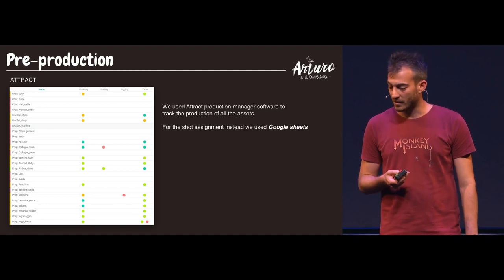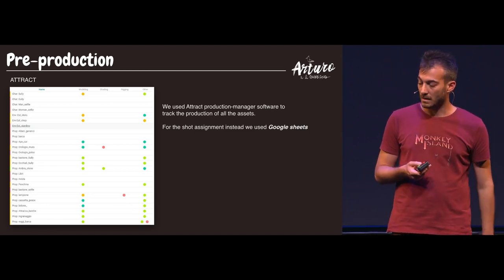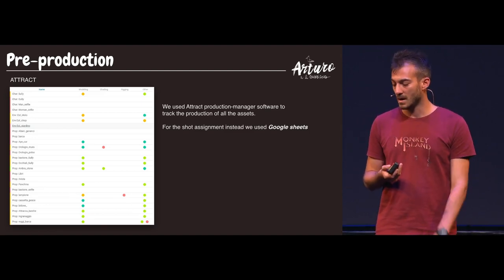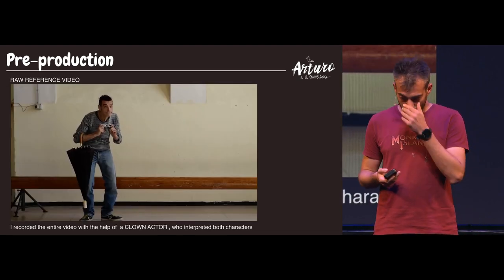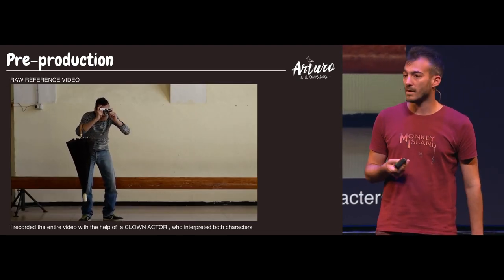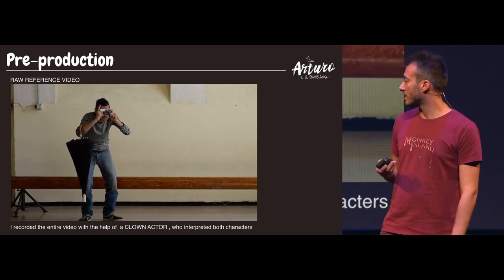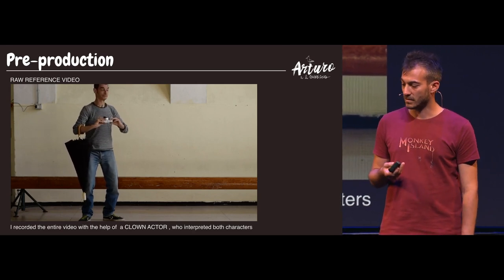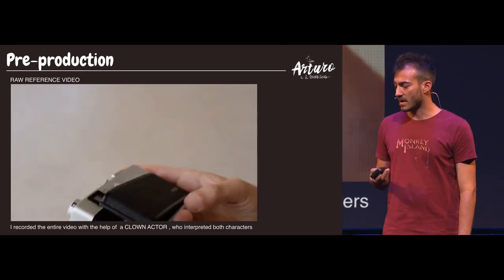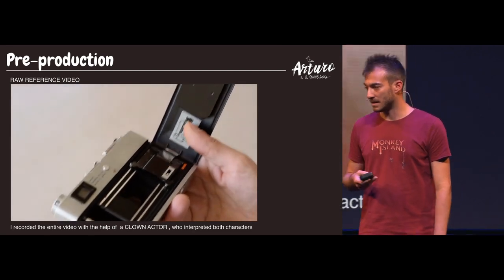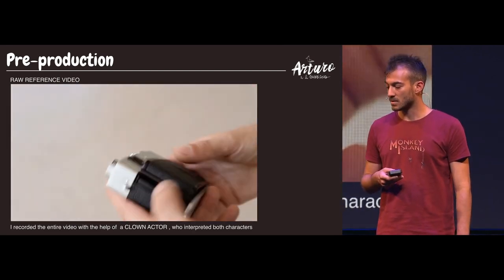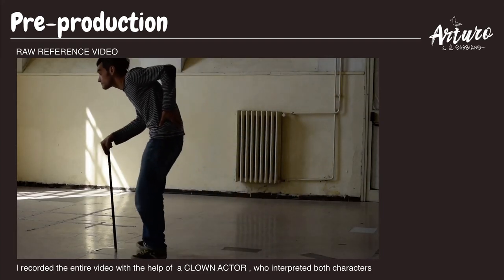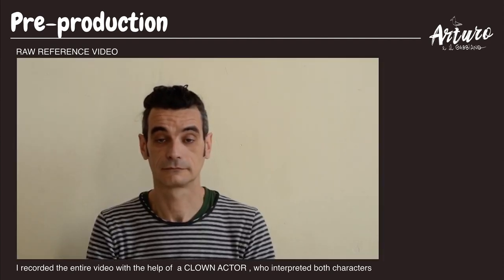We also used Attract for 3D asset management so we could control all the production. After that, I recorded the entire movie with the help of my friend, an actor who is a clown — he gave a great personality to the main character. He also made references for the seagull, so we tried to give personality to this character. Also the facial expression.